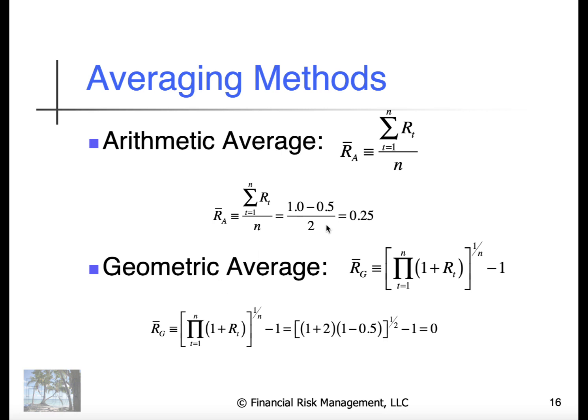In this particular case, if we have a stock that starts at 100, goes to 200, and then goes back down to 100, it has a 100% return the first year, minus 50% the second year. The arithmetic average says that I've earned 25% return.